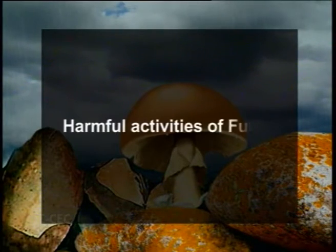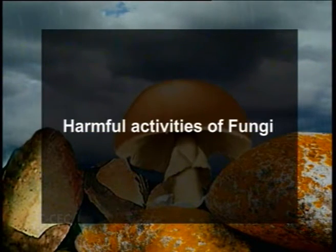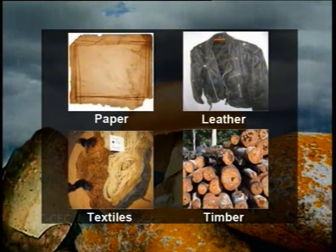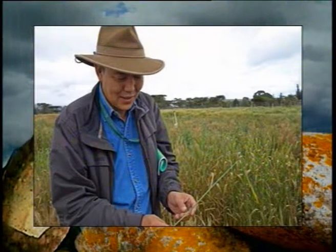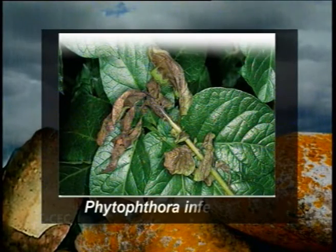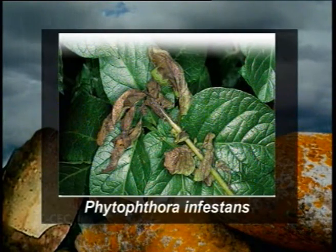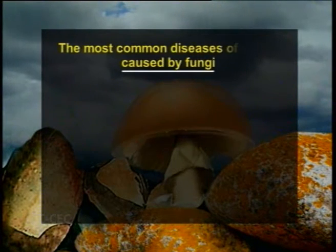While fungi have many beneficial activities, they also have a number of negative impacts. They cause many plant and animal diseases, spoil many food stuffs, and destroy valuable items like paper, leather, textiles, and timber. Most pathogenic fungi cause several diseases in plants, especially crops, and may lead to the destruction of entire crops. The most disastrous example is the Irish Potato Famine of 1845–49, caused by Phytophthora infestans, which resulted in the death of almost a million people. The most common diseases of plants caused by fungi include blights, rusts, smuts, mildews, rots, wilts, and warts.